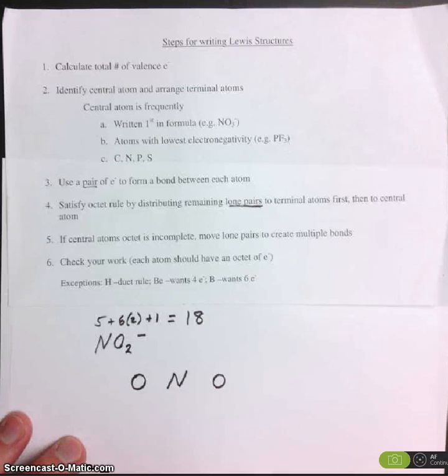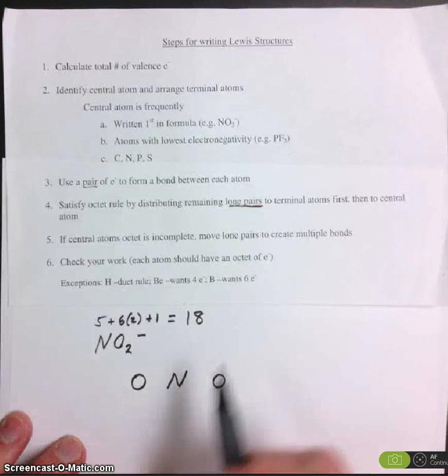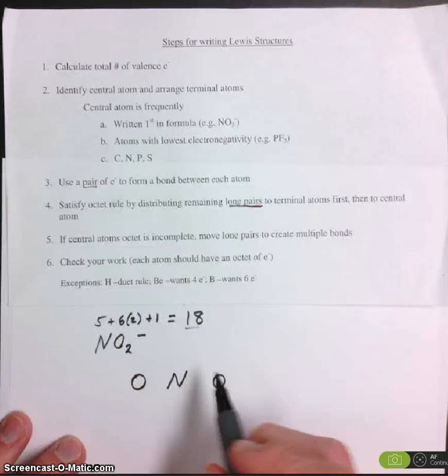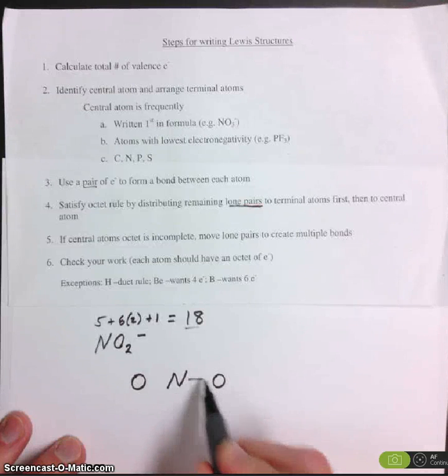Step number 3. Use a pair of electrons to form a bond between each atom. So we have 18 total to distribute. Distribute them first as single bonds.